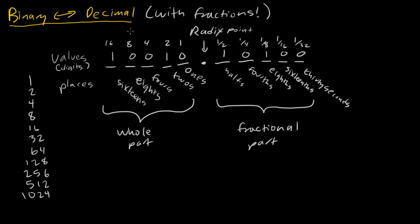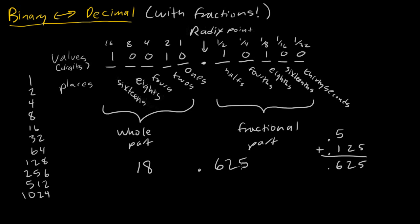We know how to do the whole part already: 16 plus 2 is just 18. Now for the fractional part — we do the exact same thing, summing up the place times the value. One-half times 1 is just 0.5. One-eighth is 0.125. So we have 0.5 plus 0.125, which gives 0.625. So this number is 18.625 in decimal.